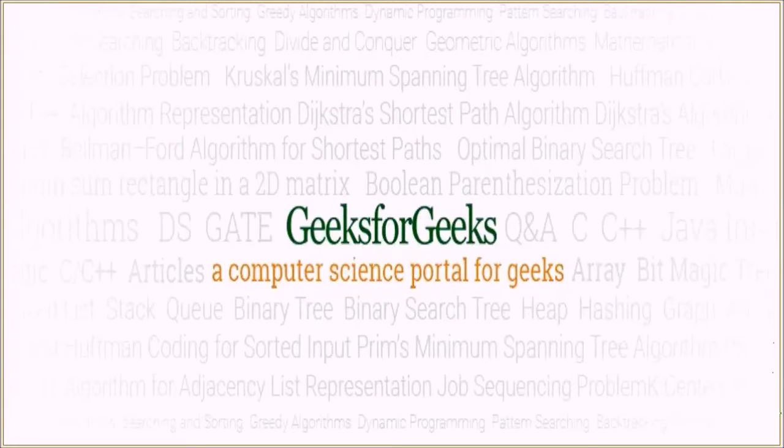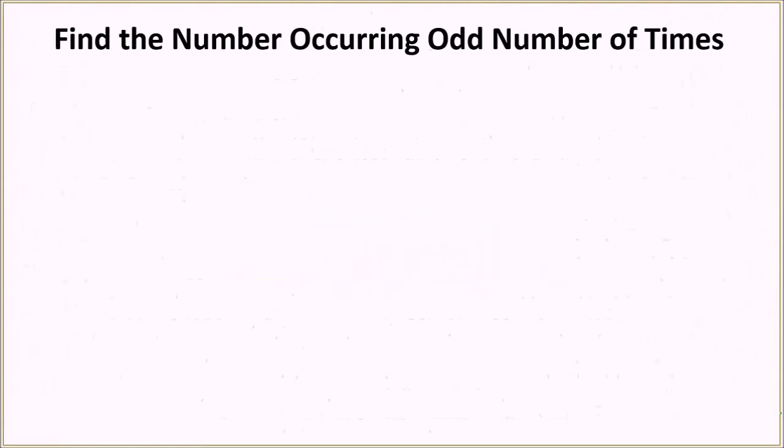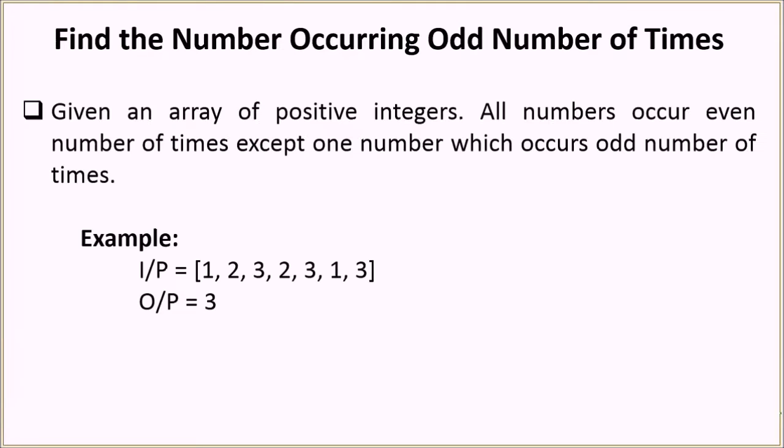Hello everyone and welcome to Geeks for Geeks. The problem which we are going to see today is to find the number occurring odd number of times. In this problem, we will be given an array of positive integers. All the numbers will occur even number of times except just one number. So that one number will be occurring odd number of times.